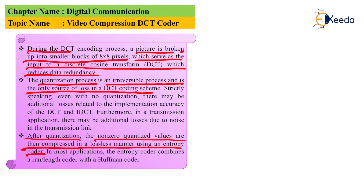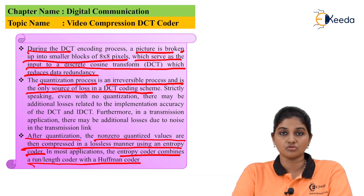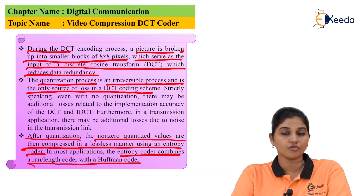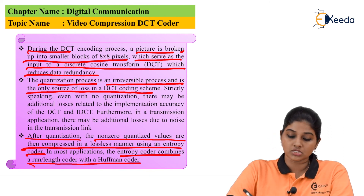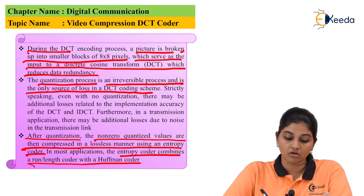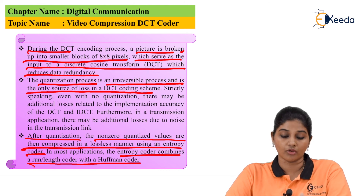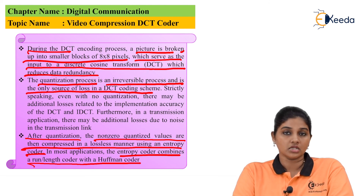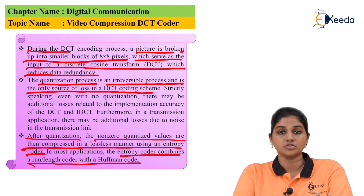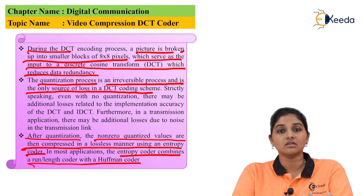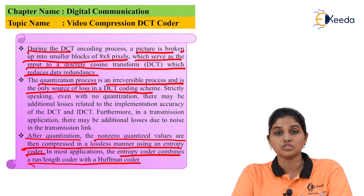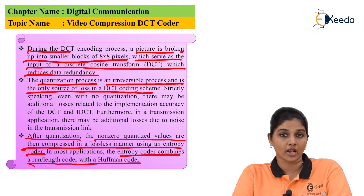After quantization, non-zero quantized values are compressed in a lossless manner using an entropy coder. In most applications, the entropy coder combines a run-length coder with a Huffman coder. So the DCT coder basically consists of three major steps: signal analysis, quantization, and entropy coding.